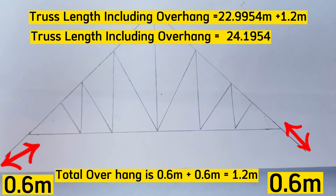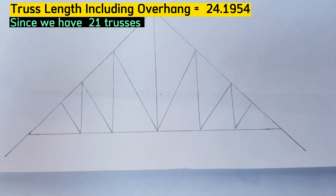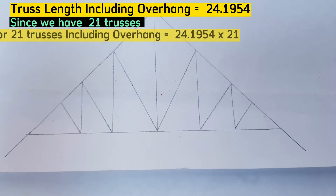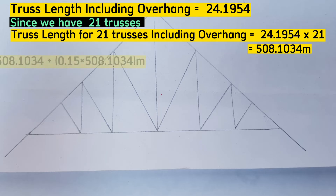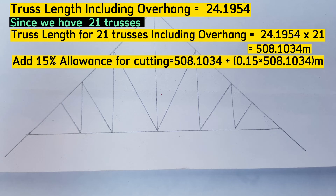Multiply the total length for one truss (24.195 meters) by 21 trusses to get 508.1 meters — the total length for all 21 trusses. Then add a 15% allowance for cuts, since timber is cut to be joined. Adding 15% to 508.1 meters gives 584.32 meters.